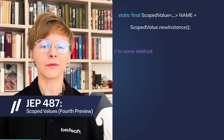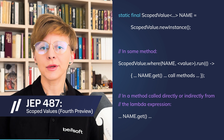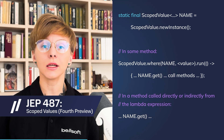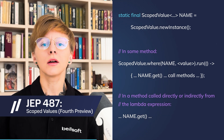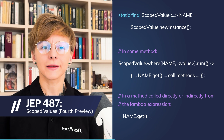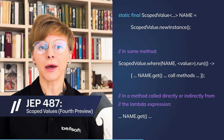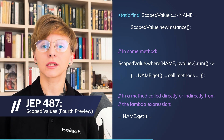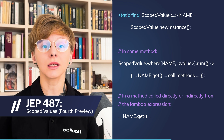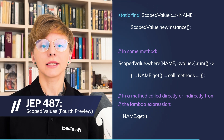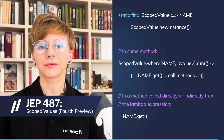JEP 487 introduces a fourth preview of scoped values. Scoped values have a limited lifetime and share immutable data in one way from the caller to the callees. These values are accessible only to the methods invoked directly or indirectly by the run method. This enables more reliable data sharing in concurrent code.